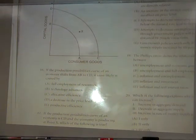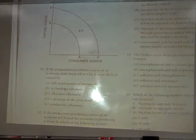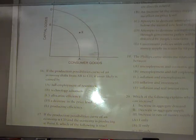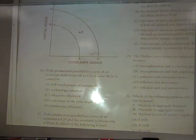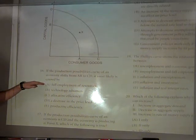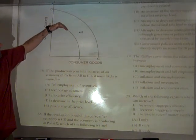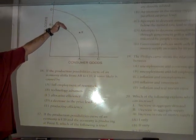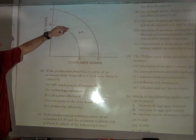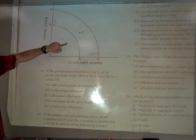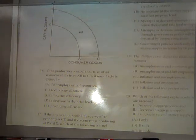This one says, if the production possibility curve of an economy shifts from AB to CD, so out, it is most likely caused by fully employing your resources. No, because the curve itself shows what the situation would be if you fully employed your resources. If you were not doing that, you would have simply been inside the curve.